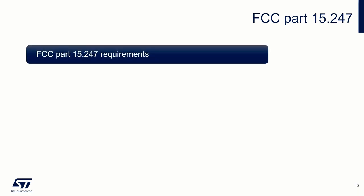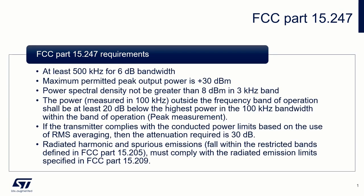The devices must fulfill the following requirements to be compliant with FCC Part 15.247. The 6 dB bandwidth of the signal must be 500 kHz at least. Maximum permitted peak conducted output power is plus 30 dBm. Power spectral density conducted from the intentional radiator to the antenna should not be greater than 8 dBm measured in 3 kHz band during any time interval of continuous transmission. In any 100 kHz bandwidth outside the frequency band of operation, the power shall be at least 20 dB below that in the 100 kHz bandwidth within the band that contains the highest level of the desired power.